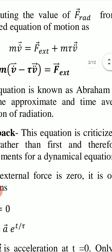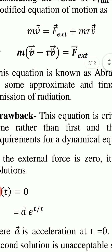This equation is criticized because it is second order in time, which runs counter to the well-known requirements for a dynamical equation of motion. Newton's equation has only v-dot (first time derivative of velocity), but the Abraham-Lorentz equation contains v-double-dot, i.e., d²v/dt², making it second order in time.